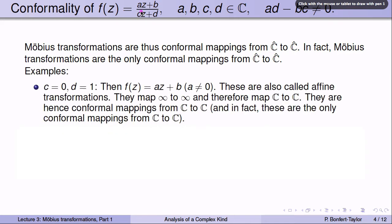Let's look at some examples. Suppose c = 0 and d = 1. The denominator is therefore just one, and the function becomes f(z) = az + b. These are called affine transformations, because they multiply z by the number a — corresponding to a rotation or dilation — and then add b, which is a translation. These mappings send infinity to infinity and therefore map ℂ to ℂ. In fact, these are the only conformal mappings from ℂ to ℂ.